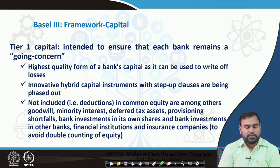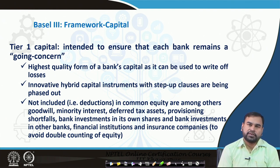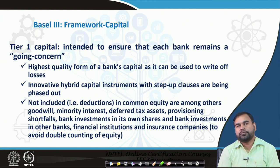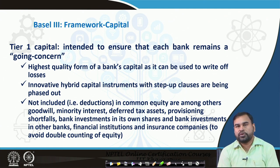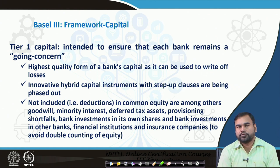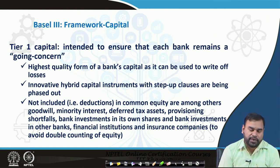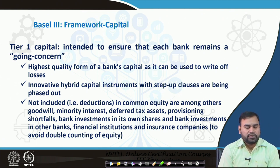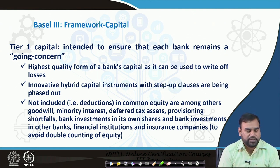According to Basel 3, the bank basically remains a going concern approach — whenever they are providing loans, they should have an idea of what kind of future cash flow a particular entity is going to generate. The bank should have enough quality capital with them so that they can absorb any losses from the credit disbursement already made. Tier 1 is the highest quality form of the bank's capital, as it can be used to write off losses.